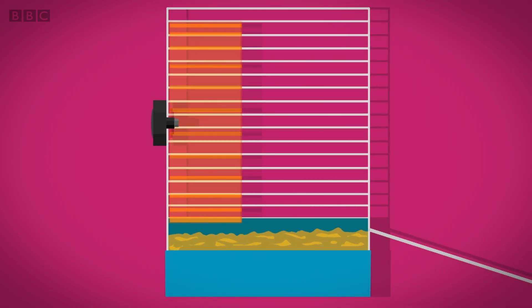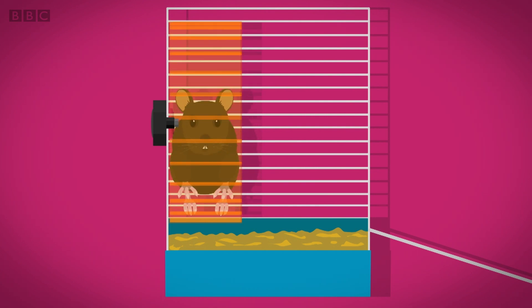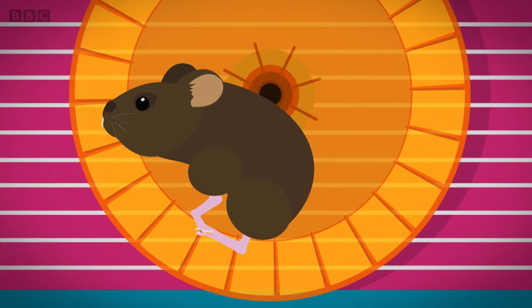But the wheel can't spin until something moves it, which is where a hamster comes in. When a hamster like Herbert starts running, the wheel spins round and round on the axle.